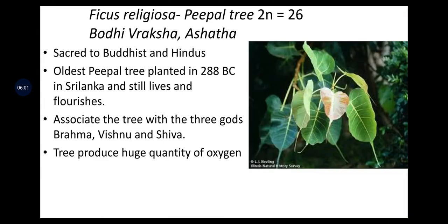Ficus religiosa (2n = 26) is the peepal tree, also known as Bodhi tree, Raksha, or Ashwatha. This tree is sacred to Buddhist and Hindu people. The oldest peepal tree was planted in 288 BC in Sri Lanka and still lives and flourishes. It is associated with the three gods — Brahma, Vishnu, and Shiva. The tree produces a huge quantity of oxygen.